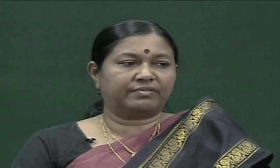You can also have a list of days of the week. Sometimes it is not necessary that all the elements of the list be of the same type or be related. For example, we could have: apple, chair, 2, 5.2, red, green, check. There is no connection between the elements of the list, but still that is also a valid list.